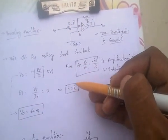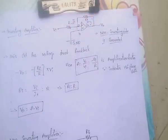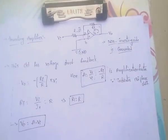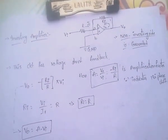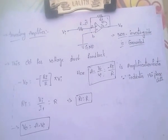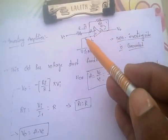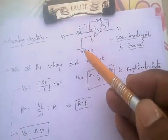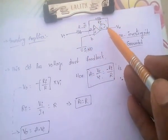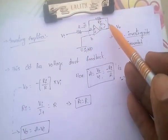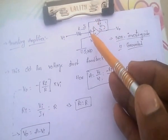Input resistance RI is equal to R only. Once again, in case of inverting amplifier, the non-inverting side is connected to ground. This circuit has voltage shunt feedback. The feedback used is voltage shunt feedback.